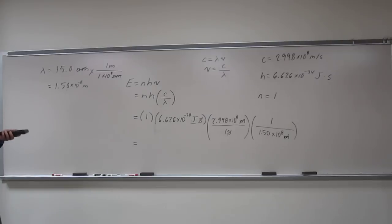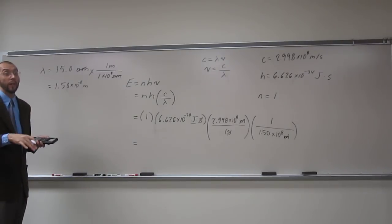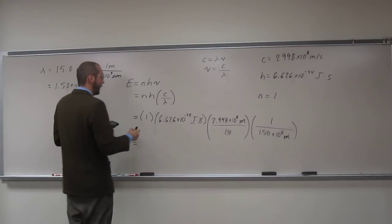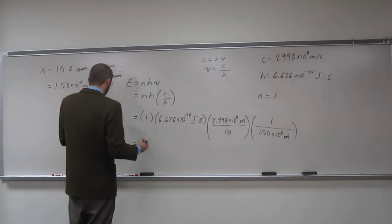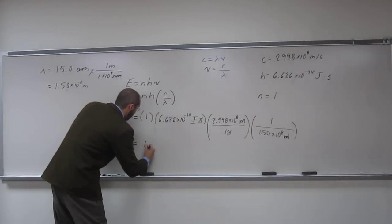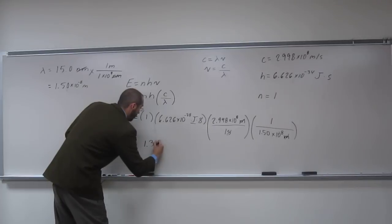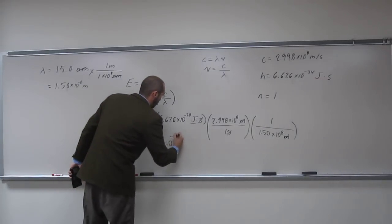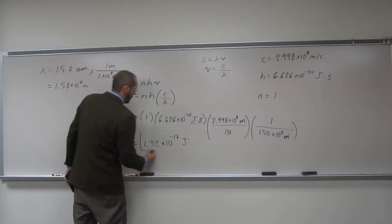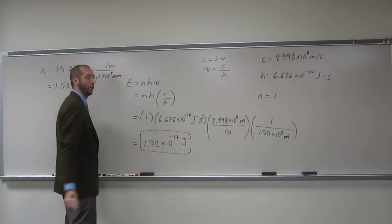And so this is just one photon, so we would expect it to be a very small number. And the number I got to 3 sig figs is 1.32 times 10 to the negative 17th joules per x-ray photon.